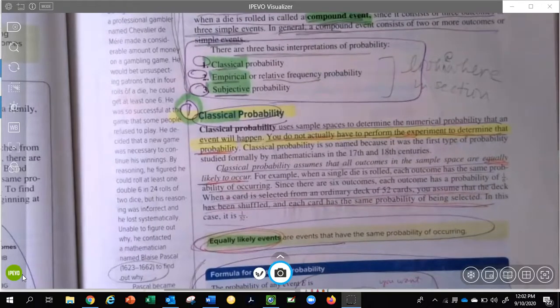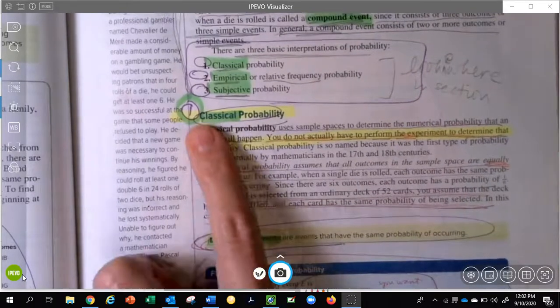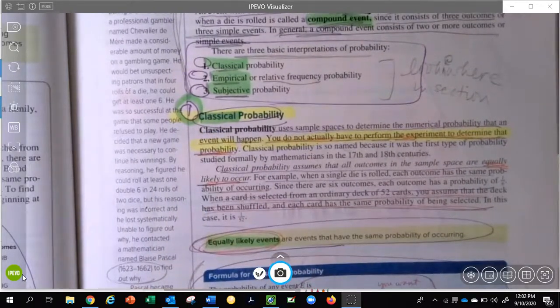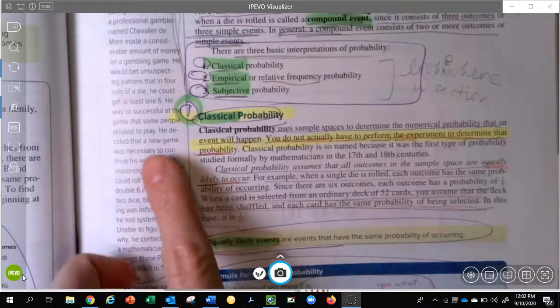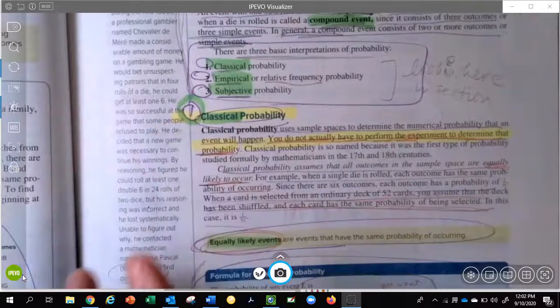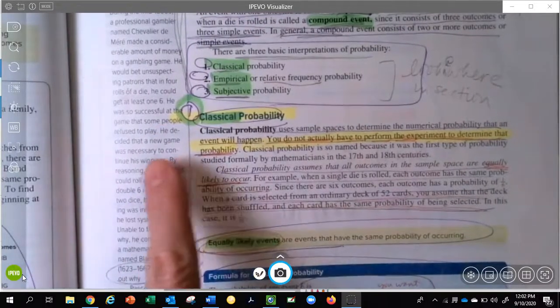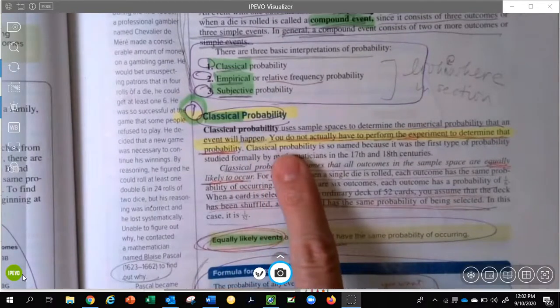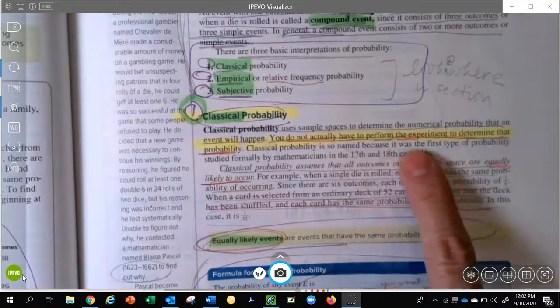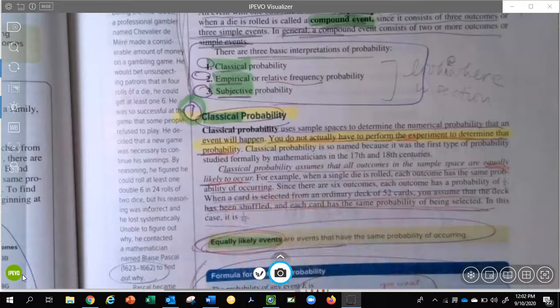But I have gone back to page 197. I just want to point out the probabilities, and that will lead us into the last one that we're talking about. So in this chapter, in this section of this chapter, you've been learning about classical probability, and I wanted to reiterate that you do not actually have to perform the experiment to determine the probability.